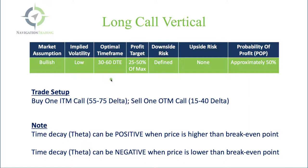We're looking for a profit target of about 25 to 50% of max. We want to manage this trade — we don't want to wait until it goes to expiration. We want to manage it at a percentage of max profit. The downside risk is defined. This is a defined risk trade; we'll know exactly what that is when we put the trade on.